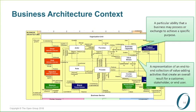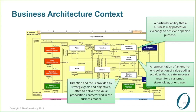We've got the concept of a value stream, which is a collection of activities that together create an overall result for a customer, a stakeholder, or an end user. We've also introduced into business architecture the idea of a course of action. A course of action is a direction and focus provided by goals and objectives, which enables us to identify what value streams we need and what business capabilities we need to support those value streams. So we've got these three new entities in the business architecture.